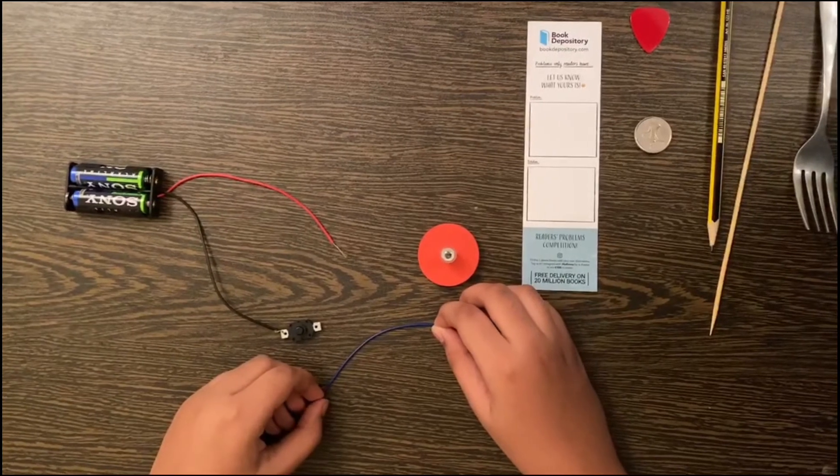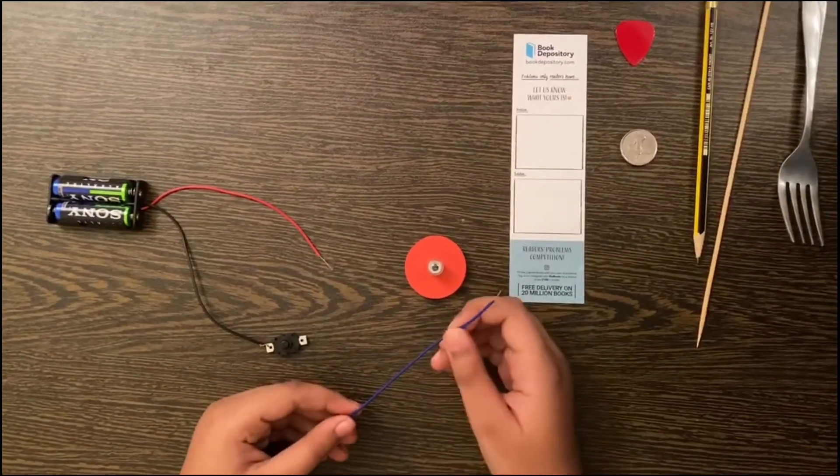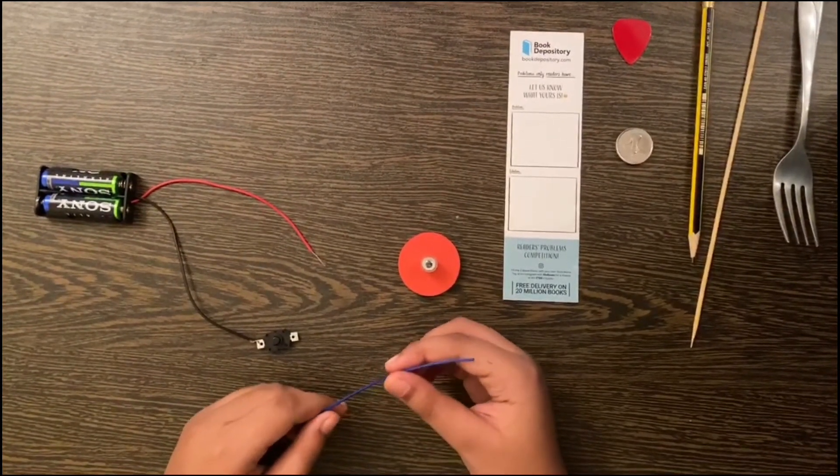What I have here are copper wires and plastic insulation. We will talk more on conductors and insulators in our next video.